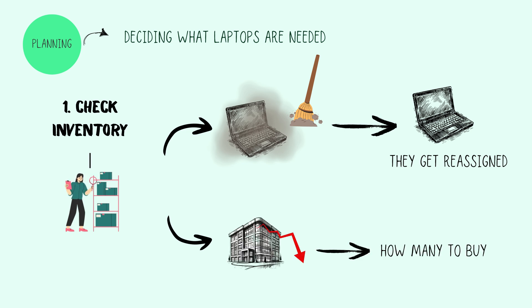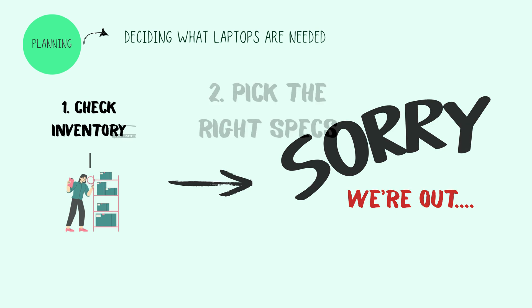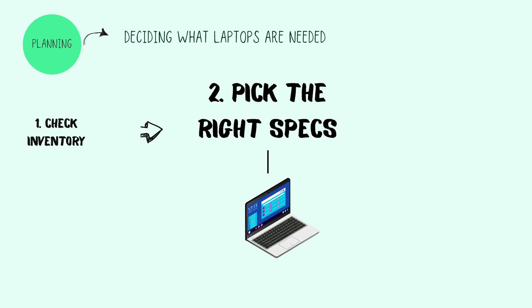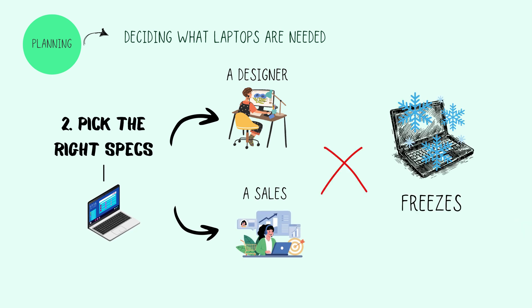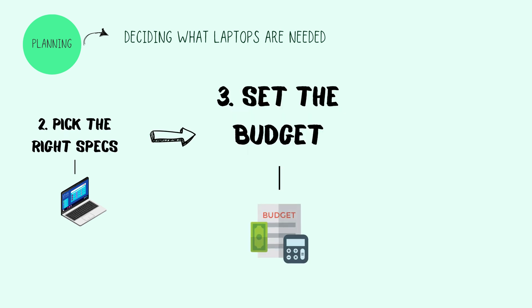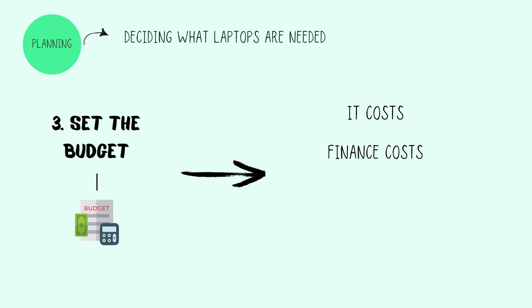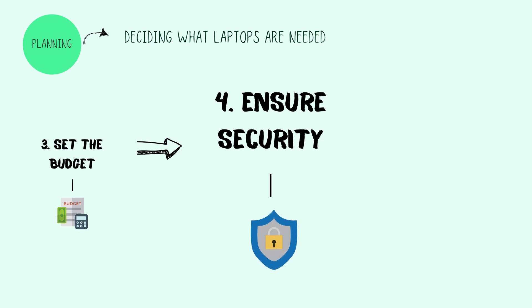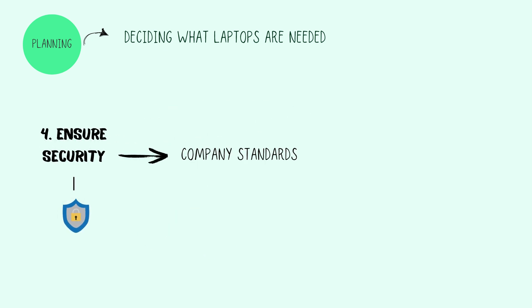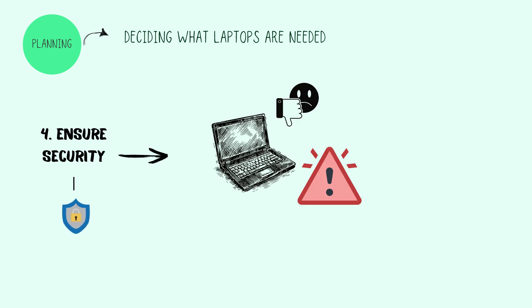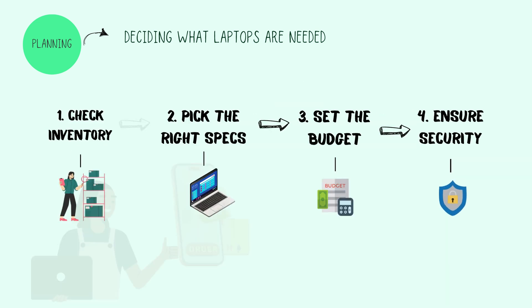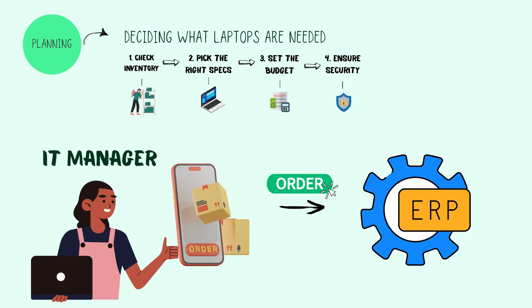Because nobody wants to hear 'Sorry, we're out!' Step 2: Pick the right specs — a designer needs power, a sales rep needs portability, and no one wants a laptop that freezes every 5 minutes. Step 3: Set the budget — IT and finance balance costs, warranties, and hiring needs to avoid overspending now or regretting it later. Step 4: Ensure security — every device must meet company standards for encryption and remote management, because a fancy laptop is useless if it's a security risk. Once everything checks out, IT places the order through an ERP system to keep things on track.